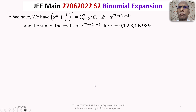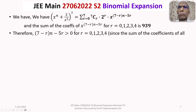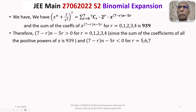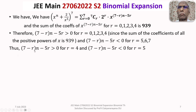Therefore, the power (7-r)(n-5r) — wait, the power (7-r)·n - 5r — must be positive for r=0,1,2,3,4, because the sum of coefficients of all positive powers of x is 939. The remaining powers for r=5,6,7 must be negative. Thus (7-r)·n - 5r > 0 for r=4, and the before ones will automatically be positive. Once it becomes negative for higher r values, the subsequent powers will also be negative.